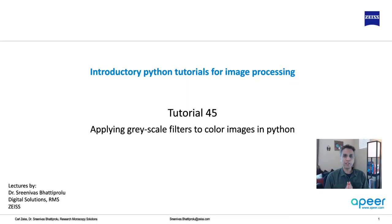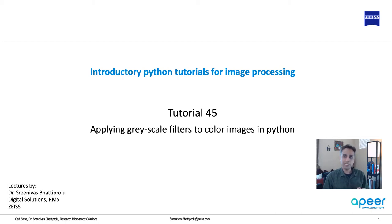Hi everyone. Welcome to tutorial 45 of our introductory Python for image processing tutorial series. In the previous tutorial I talked about color spaces, and in this tutorial we'll actually apply that knowledge to apply grayscale filters to color images. A lot of filters in scikit-image and OpenCV are designed to work with grayscale images, so you end up reading your color images as grayscale and some information is lost. So what if you want to apply them to color images?